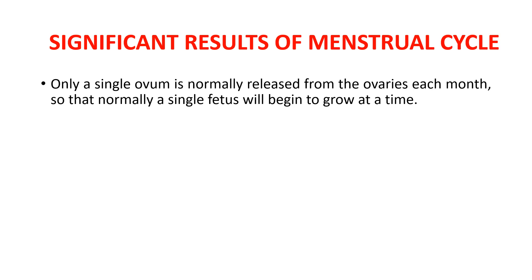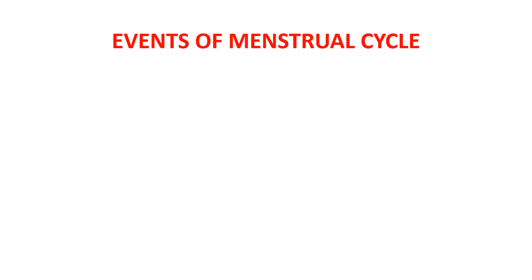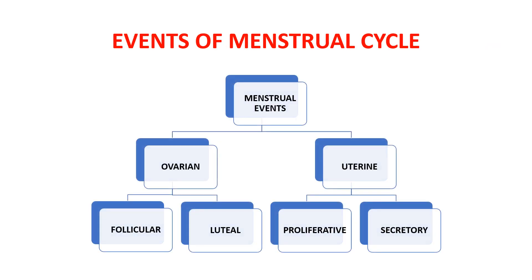Now, let us know about the significance of the menstrual cycle. The menstrual cycle allows the growth of a single fetus at a time by releasing usually only one ovum per cycle. It prepares the uterine endometrium for the implantation process of the blastocyst. Both ovarian and uterine events take place during each menstrual cycle. Ovarian events consist of follicular and gluteal phases. Uterine events have both proliferative and secretory phases.